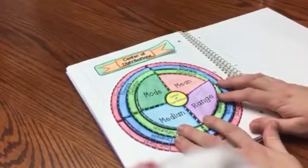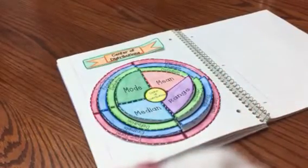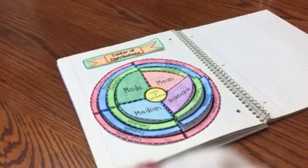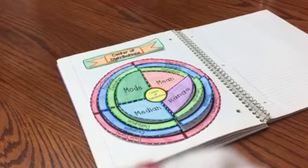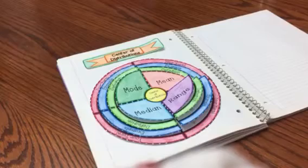We call them mode, mean, median, and then range. Alright, if you like my wheel foldable please go ahead and click the link down below. In my store you will find I have lots and lots of other wheel foldables so please check those out as well. Thank you so much for watching my video. Bye!